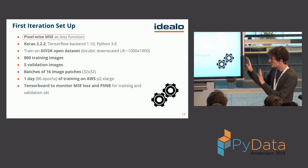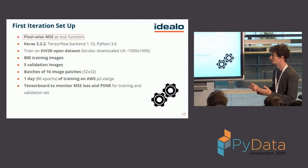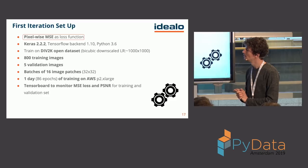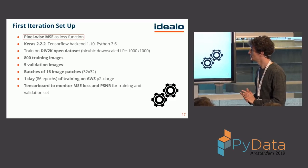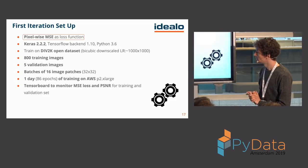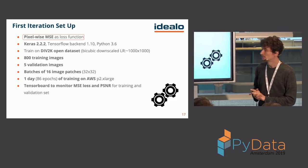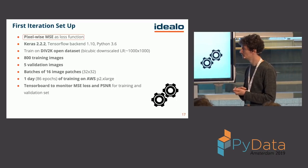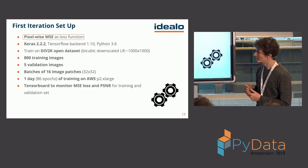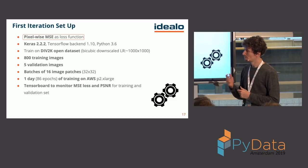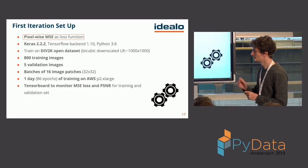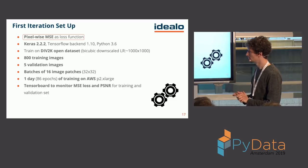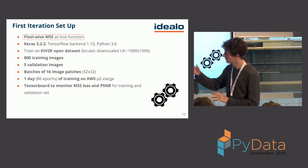For our first training session, we used pixel-wise mean squared error as the loss function. We used Keras with TensorFlow backend, and trained on the DIV2K open dataset — 800 training images with 5 validation images, following what the papers were doing. We filled batches of 16 image patches and trained for one day on a P2XLarge instance, which was around 86 epochs, monitoring everything with TensorBoard.